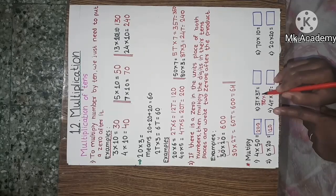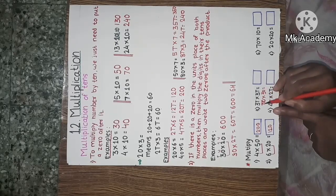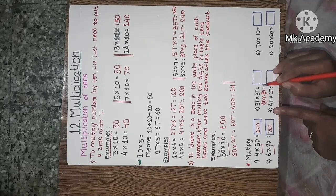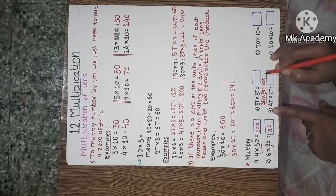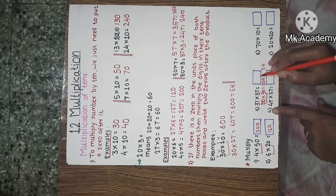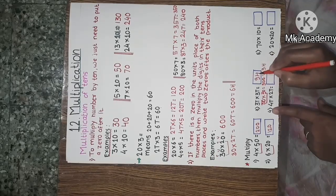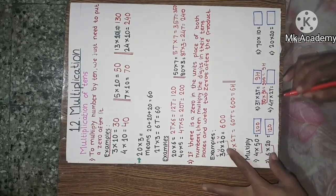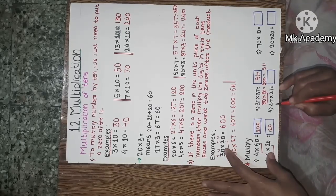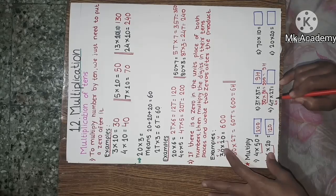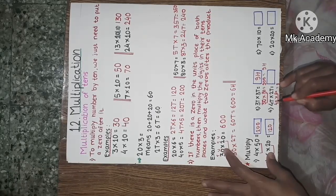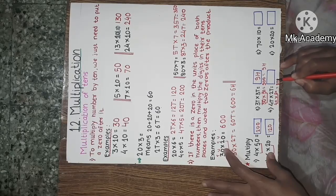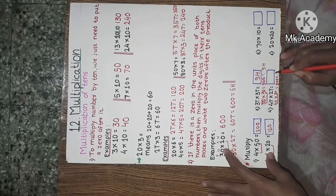Now 3 tens into 3 tens means 30 into 30. We multiply the tens places: 3 threes are 9, then put two 0s to get the answer 900. Next: 40 into 40. We multiply the tens places — 4 fours are 16 — then put two 0s. We get 8 in the tens product and two 0s, giving 800.